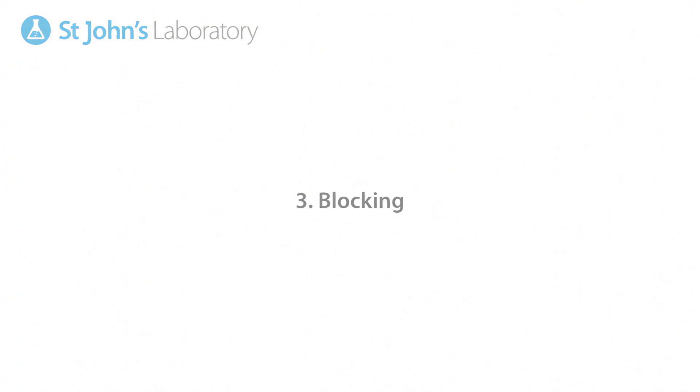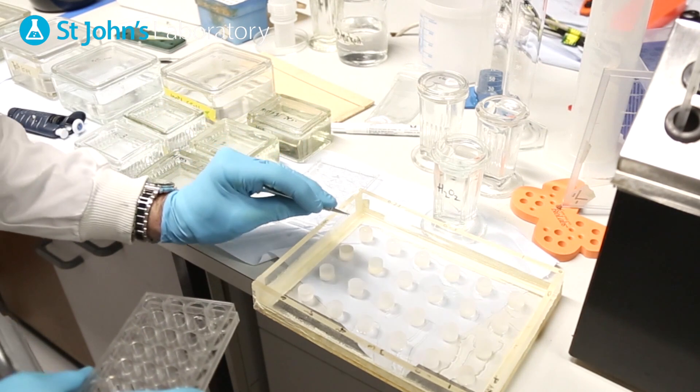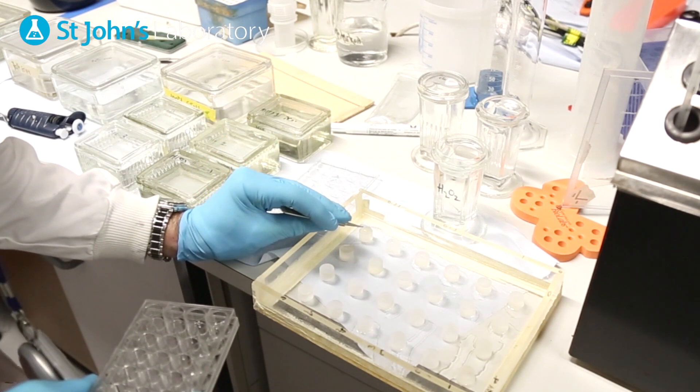Following another rinse with PBS remove each slide from its well and invert onto a humidifier block to expose the cells to 5% BSA in PBS.